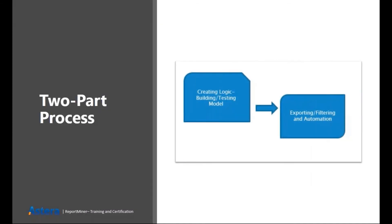It is a two-part process. The first part is creating the report model — that is, creating the extraction logic. The second part is exporting data based on that extraction template and applying transformations like filtering, sorting, and aggregation. After that, which is done in the data flow, you can automate the whole process.